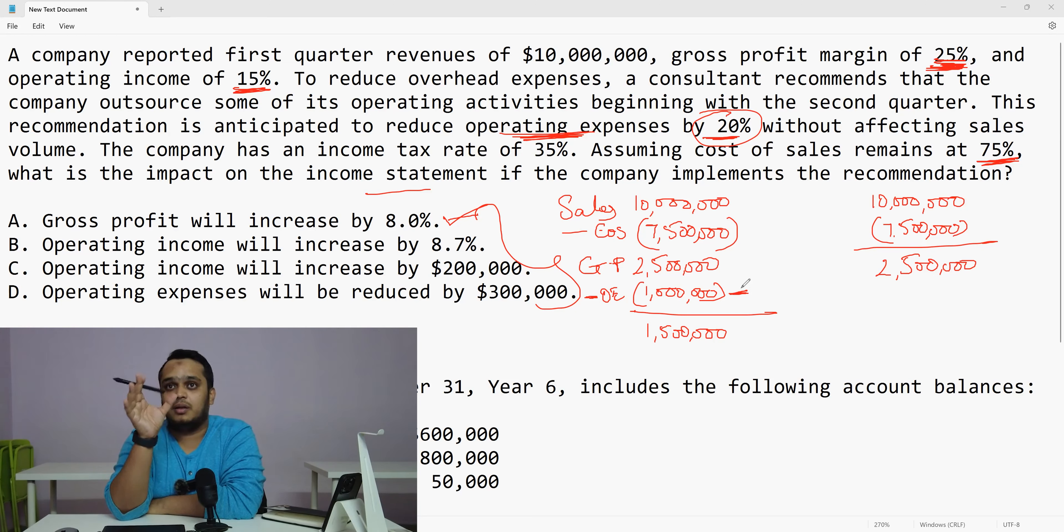Because see, right now it's becoming really good for me. Now this 1 million going down by 20%, this will be how much? 800,000. If I remove it, what would be my operating profit? It would be 1.7 million. So this is my operating income. What is the difference between the two? What has happened after the implementation? My operating income has gone up. At what value has it gone up? 200,000.